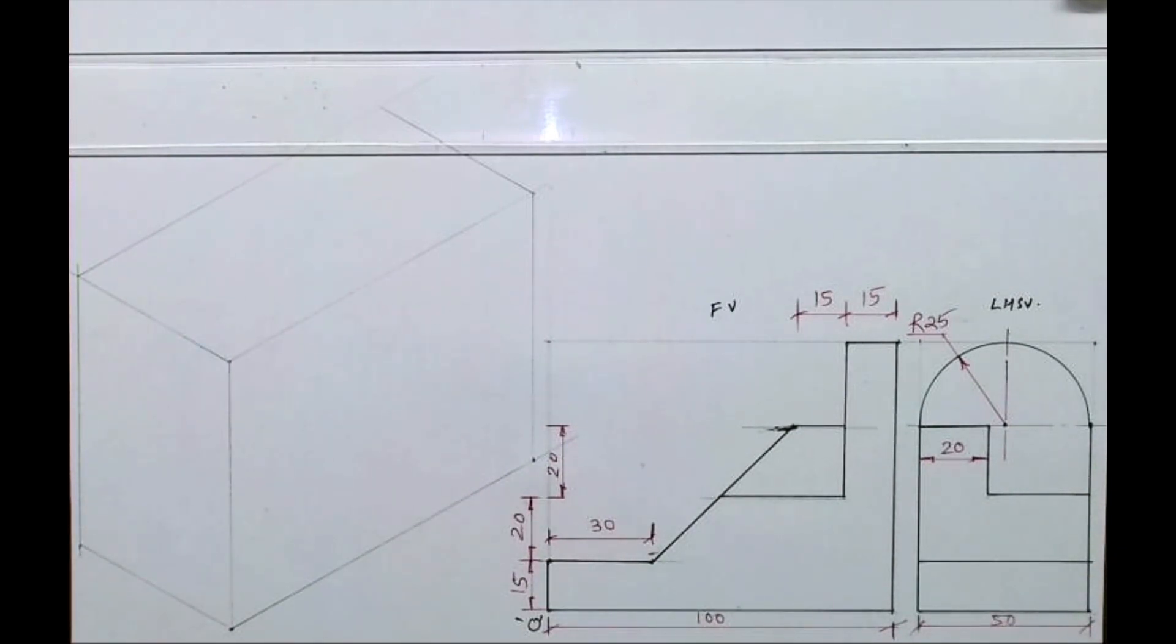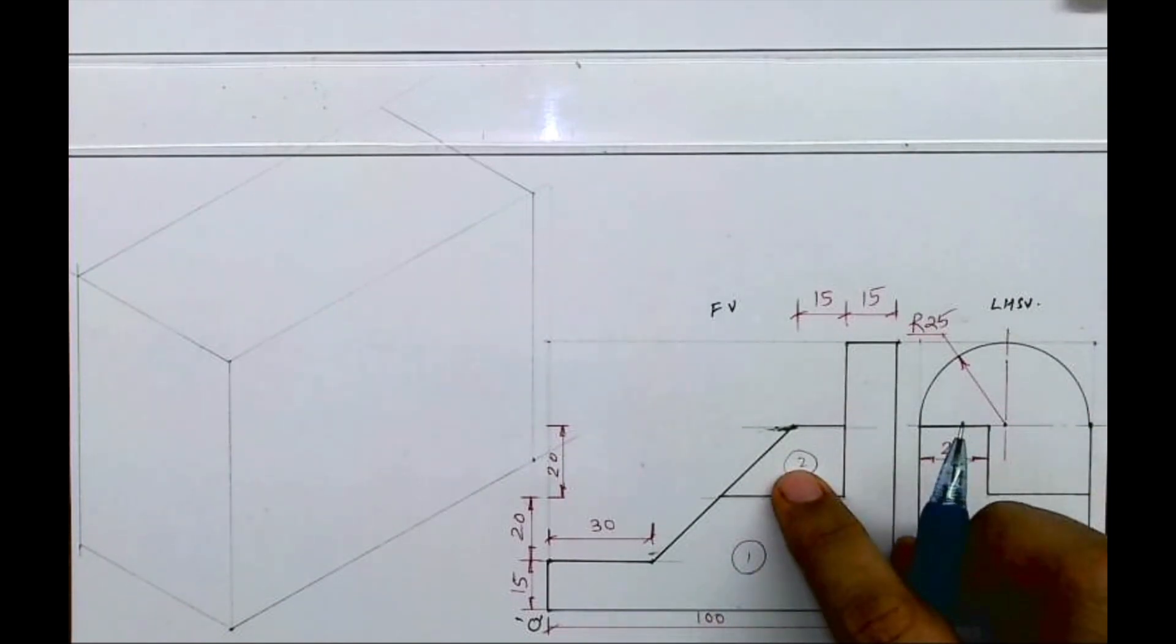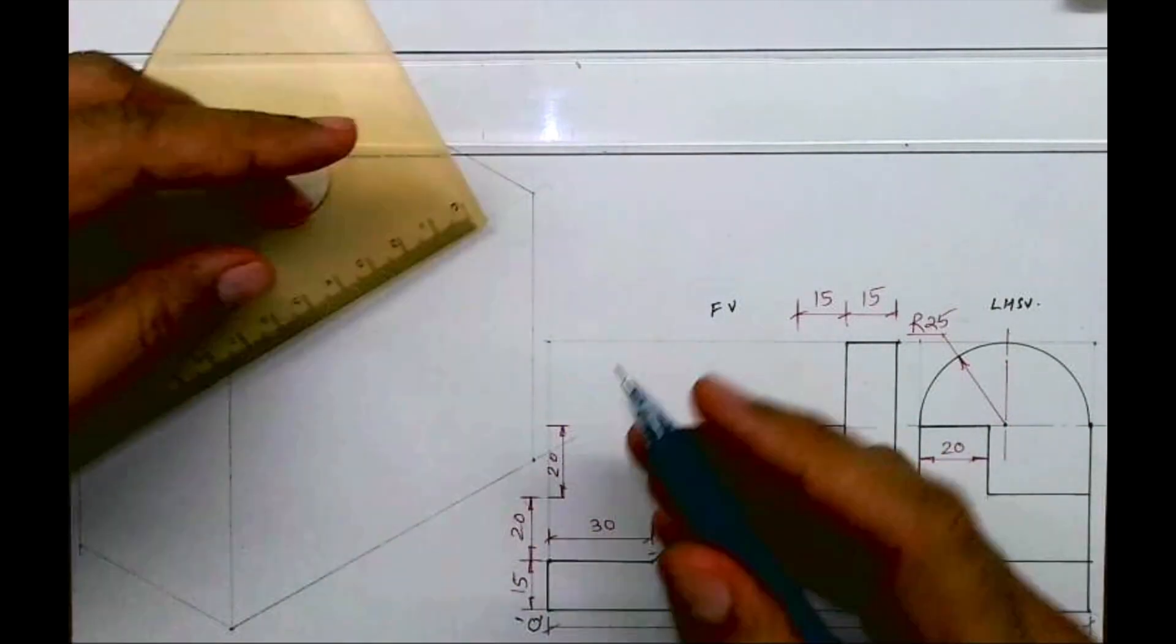Now in front view there are two parts and in side view there are three parts. So we'll start with front view. If you see this entire thing is one unit, so we'll try and draw that first.